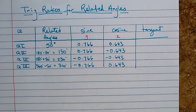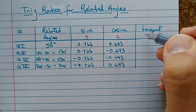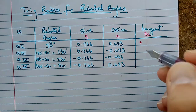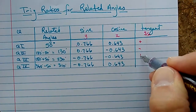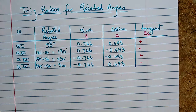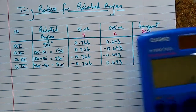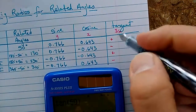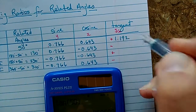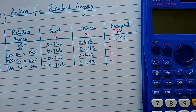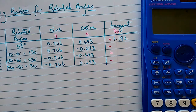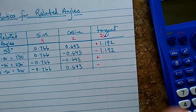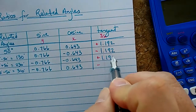Tangent can be found by taking y divided by x — that's sine over cosine. So looking at the signs: positive divided by positive gives a positive result in quadrant 1; positive divided by negative gives negative in quadrant 2; negative divided by negative gives positive in quadrant 3; and negative divided by positive gives negative in quadrant 4. Typing in the calculator: tangent of 50 is about positive 1.192, and tangent of 130 is negative 1.192. The same values — just some are positive and some are negative.